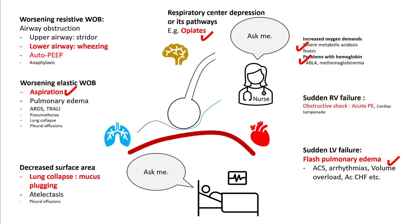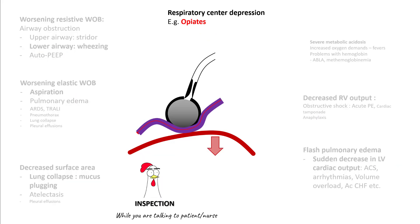The first step is to ask your nurse, who should be able to give you important information about what's going on with your patient — such as recent medications given, whether the patient has been aspirating, their volume status, and whether they've had fevers or blood loss. Patients can also give you important symptoms.